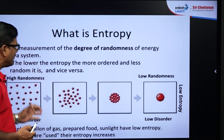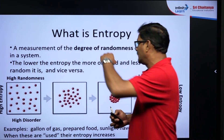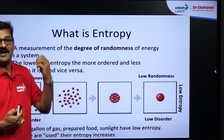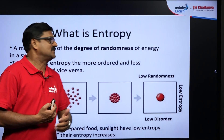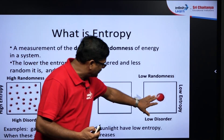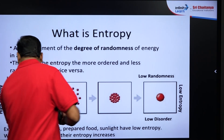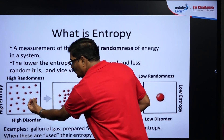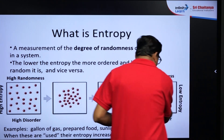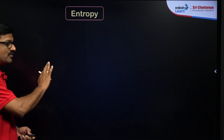Entropy is nothing but the degree of disorderness — a measurement of the degree of randomness of energy in the system. The lower the entropy, the more organized the system is, and the less random it is, and vice versa. Here where particles are compact, degree of randomness is less and entropy is low; where particles are free, degree of randomness is more and entropy is high.